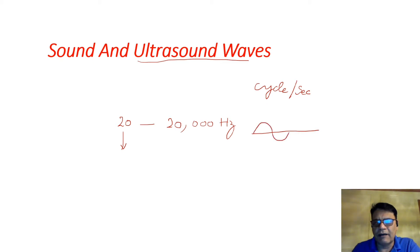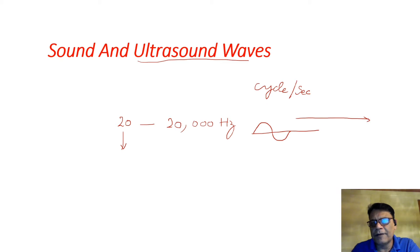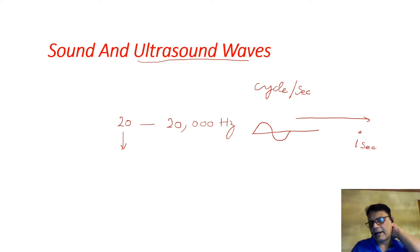So what is Hertz? Hertz is a cycle per second. This represents one cycle of a wave. If you allow this one cycle to move across a specific point in one second, that frequency is called one cycle per second, also known as Hertz, named after the scientist who developed this definition.